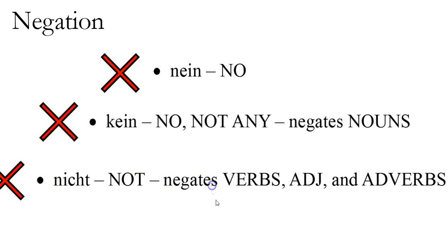So that would negate verbs, adjectives, and adverbs. So there's three different types of no in German: nein, kein, nicht.